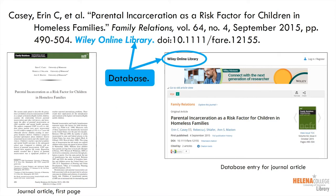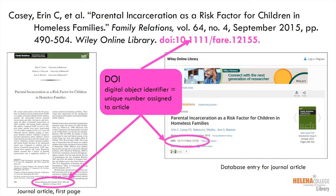Next, write the name of the database where you found the article. This is sometimes printed on the article, but you can also look at the database page. For example, this article came from Wiley Online Library. This is in italics and ends with a period. Finally, give the DOI for the article — this stands for Digital Object Identifier and is a unique number assigned to the journal article. You can find this on the database page or on the article near the volume, issue, and date.